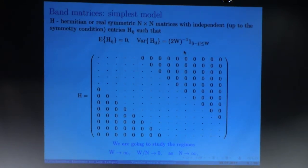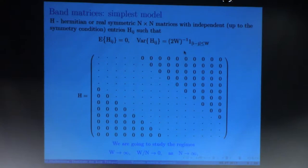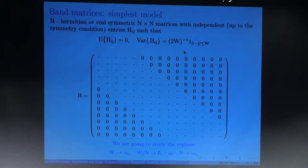I will start from the definition of the band matrix. What is a one-dimensional, typical, very simple band matrix? You have a Hermitian matrix, and inside the band of width 2W plus 1, you have something, and outside you have zeros. So if you normalize, as usual there is a symmetry condition, expectation is zero, and the variance is normalized so that the sum of the variance in each line equals one.